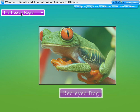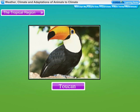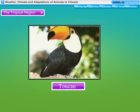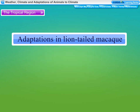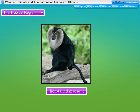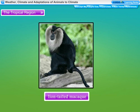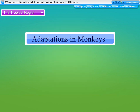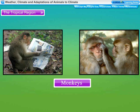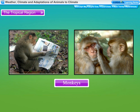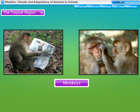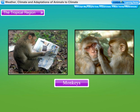The toucan has developed a long, colorful beak measuring more than half the length of its body, helping it obtain food that other animals cannot easily procure. The lion-tailed macaque lives in the rainforests of the Western Ghats in South India. Its most outstanding feature is a silver-white mane surrounding the head from cheeks down to the chin, giving it its German name 'beard ape.' Monkeys are well adapted to live on trees — they have long tails for grasping branches, hands and feet for holding branches, and an opposable thumb to grasp small things.